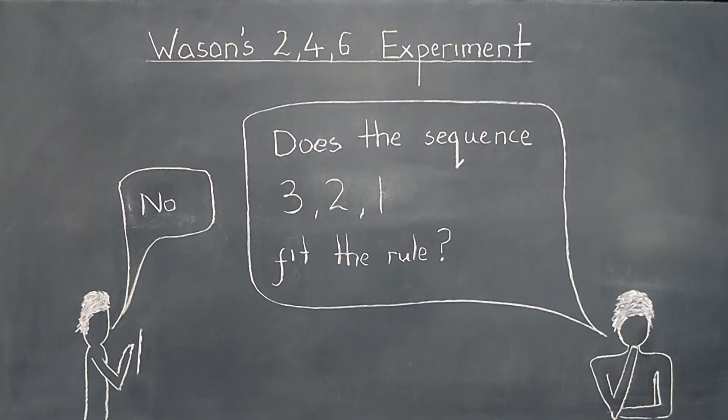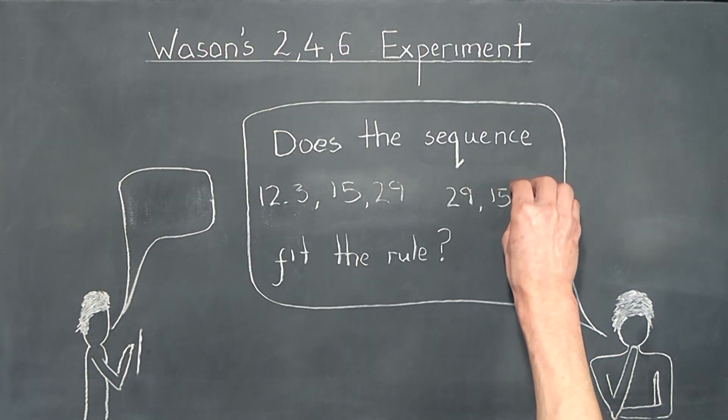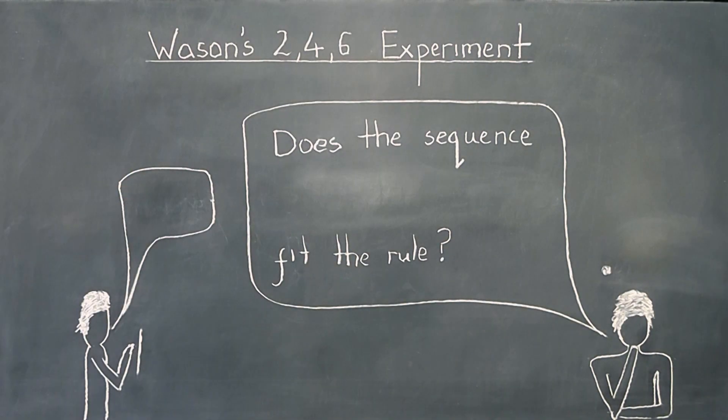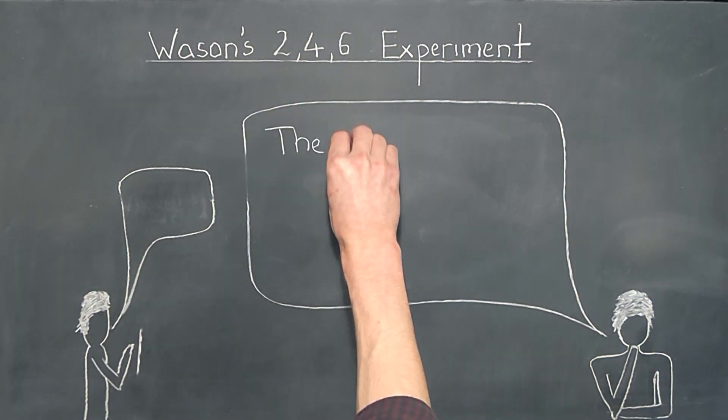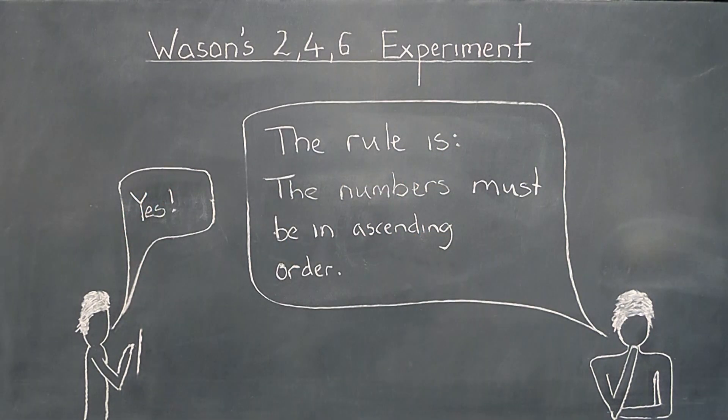In other words, Stan would actively seek to disprove his existing theory. He would then adjust his theory as he gathered new evidence. If a theory survived all his attempts to disprove it, he would be more confident about its validity than if he'd only asked about sequences which he thought would fit the theory.